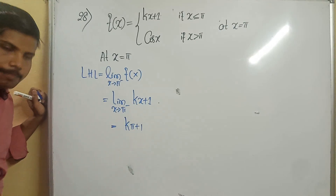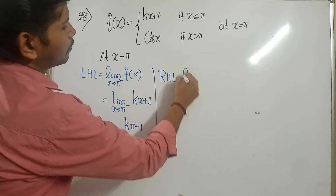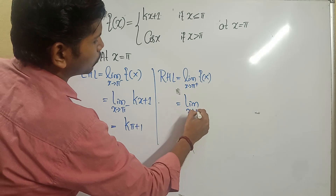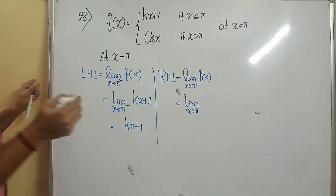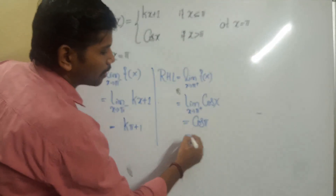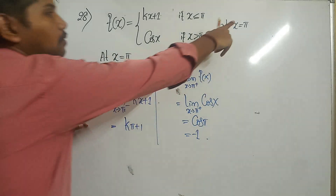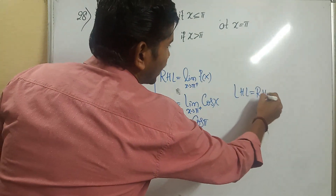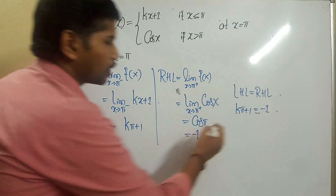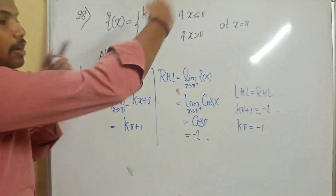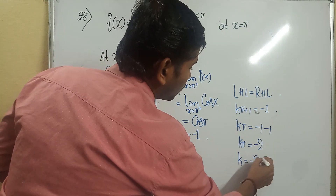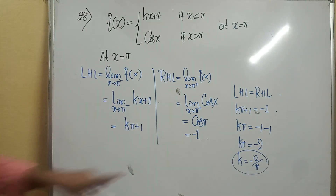Substituting x = pi into kx + 1 gives k·pi + 1. For RHL: limit of f(x) as x tends to pi plus. Pi plus means greater than pi, so the function is cos x. cos(pi) equals minus 1. Since the function is continuous at x = pi, LHL must equal RHL: k·pi + 1 = -1, so k·pi = -2, and k equals -2 by pi. Don't write pi equal to 2 by k — you must find k only.